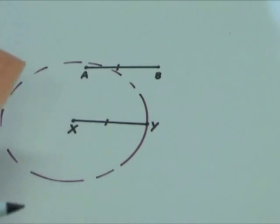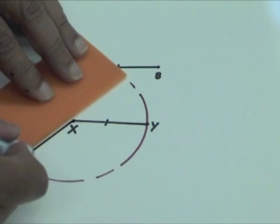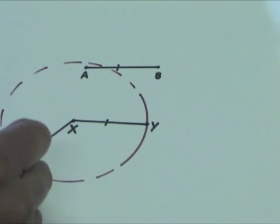So, any radius of the circle will be a line segment with length XY.